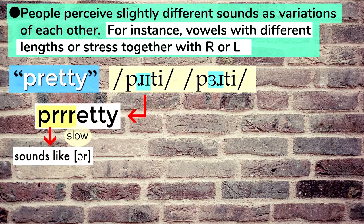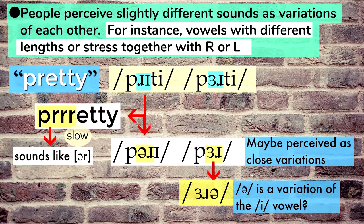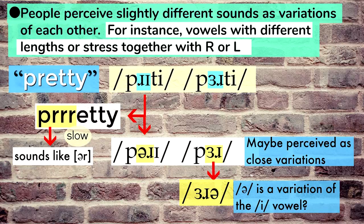Maybe people came to perceive the beginning of the word 'pur' as close variations. And maybe when they say 'purty', they are perceiving a slight schwa vowel after the R, and that slight schwa is considered a variation of the 'ih' vowel. I'm speculating, of course, but if you break down the sounds, you can see where people might perceive some similarity. And there are probably other reasons for metathesis as well, like the influence of other languages through contact.